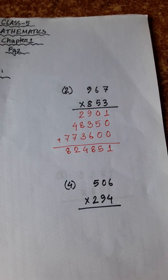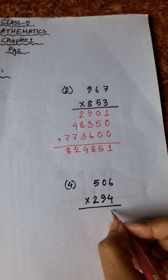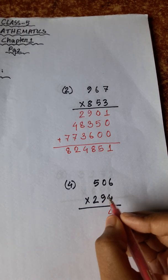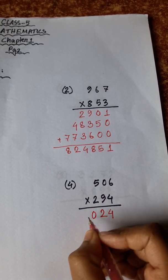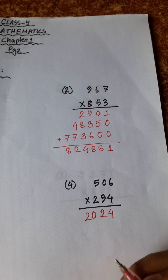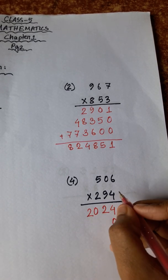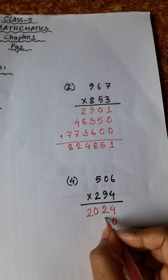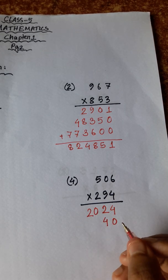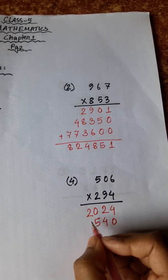Number 4: 506 multiplied by 294. 6 fours are 24, carry 2. Four zeros are zero, plus 2 is 2. 5 fours are 20, carry 2. 6 nines are 54, carry 5. Nine zeros are zero, plus 5 is 5. 5 nines are 45, carry 4. 5, 5, 9, 7 — forty.